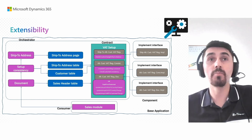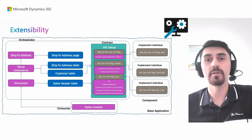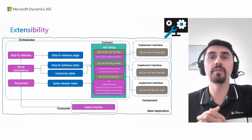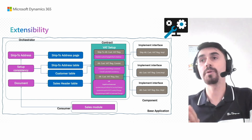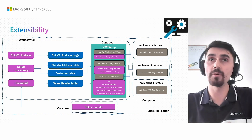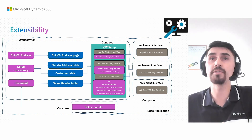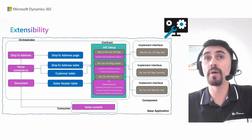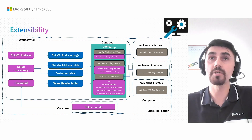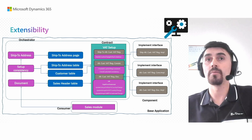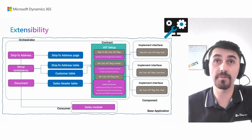The second part is setup consistency, which is connected both to the ship-to address table and to the customer table. The idea is that the setup must be consistent — the alternative customer VAT registration must only be for countries other than the customer's own country. There is an interface called 'Alternative Customer VAT Registration Consists' with two methods: one to check the ship-to address and another to check the customer consistency. If you need a different implementation, you have the interface for that.